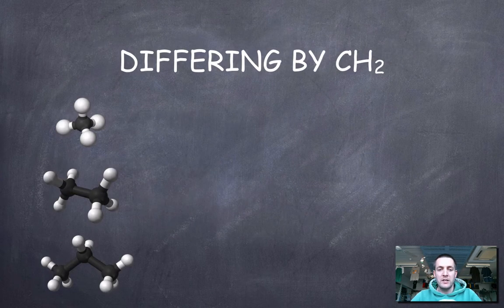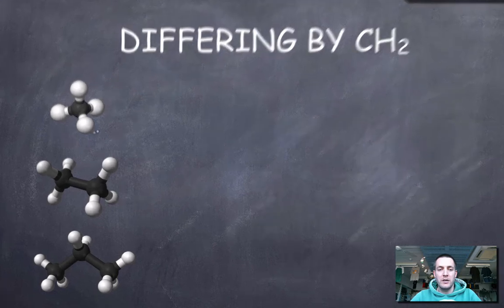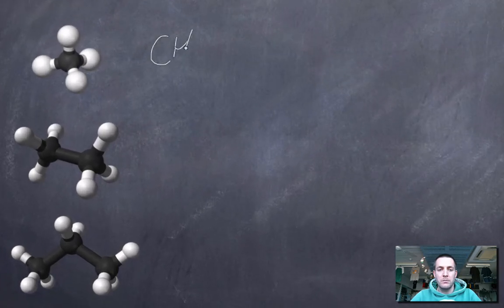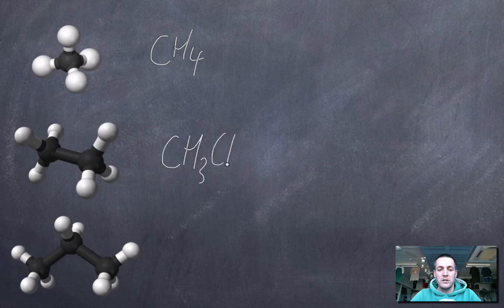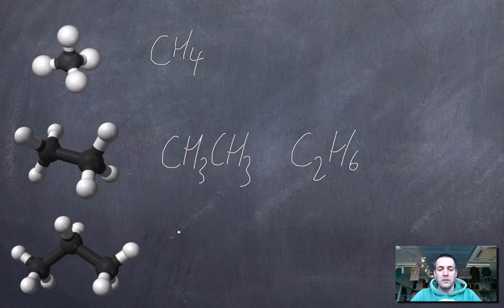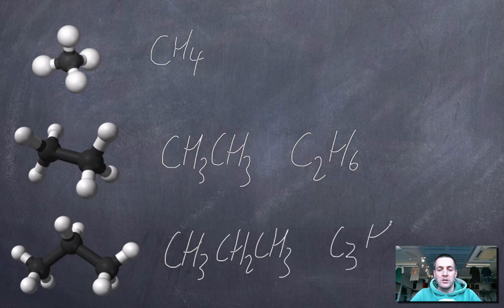Once again, just to illustrate this differing by CH2 thing, here we've got CH4. This is called methane. These are actually all alkanes, but we'll look at alkanes in more depth later. This can be written as CH3 joined to CH3, or as I wrote on the previous slide, C2H6. And this one could be written as CH3, CH2, CH3, or in other words, C3H8.